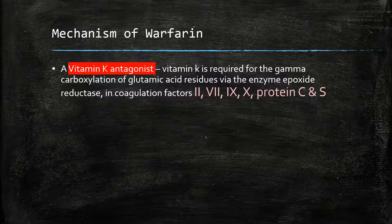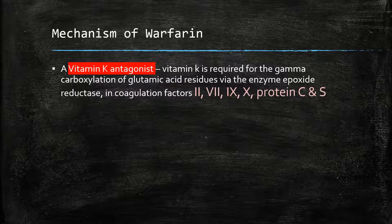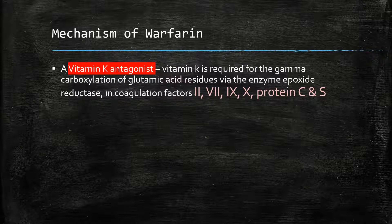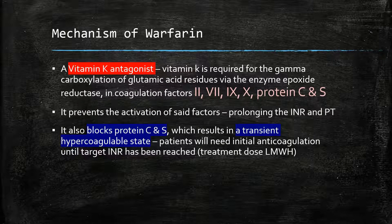In the short term, therefore, there is an increased coagulability with warfarin until the suppression of coagulation factors 2, 7, 9 and 10 catches up and exceeds the increased coagulable state resulting from the suppression of protein C and S. Until that time is reached, it is important to provide additional anticoagulation with low molecular weight heparin until the target INR can be reached.